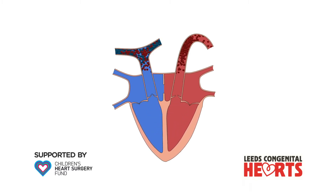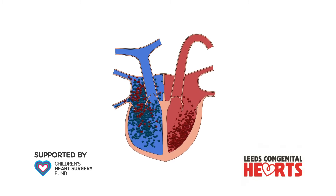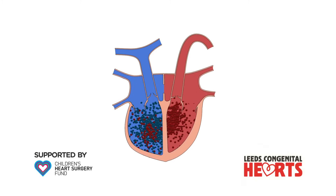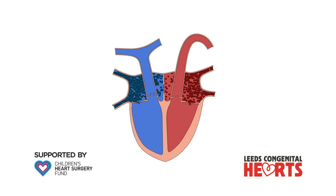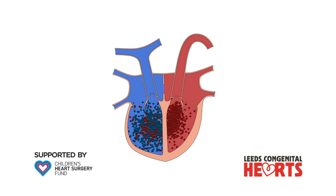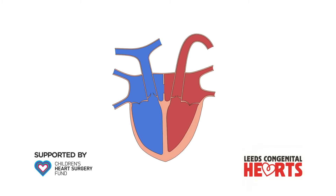This extra blood can cause the right side of the heart to enlarge. The impact of an ASD largely depends on its size. At one end of the spectrum, a large ASD results in a large amount of extra blood flow through the right side of the heart to the lungs, and may cause problems such as breathlessness and abnormal heart rhythms.